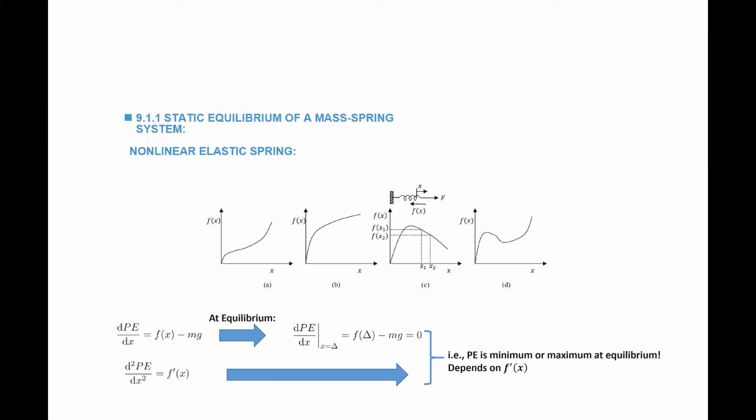Looking at the different non-linear force-displacement curves: in the first and second cases the slope is always positive, implying that the potential energy is always minimum at equilibrium. When we look at the third and fourth curves, part of the curve has a decreasing (negative slope) region. In these regions where the slope is negative, equilibrium corresponds to a maximum potential energy of the system, which implies that the equilibrium in these situations is unstable.